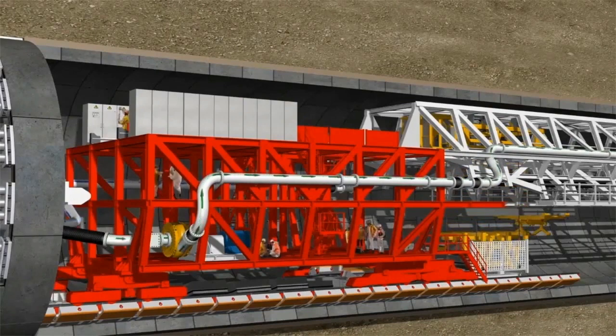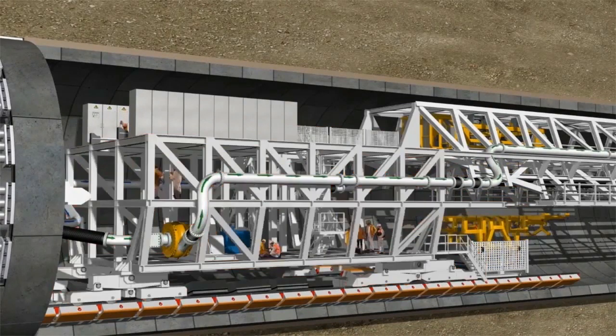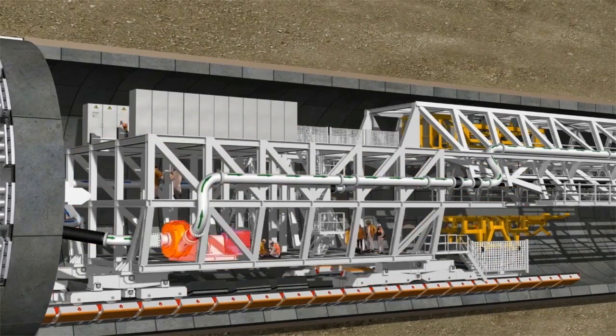The first gantry is located behind the erector. Due to the machine's large diameter, the backup system has three levels, so that it can accommodate the slurry pump, control cabinets, bentonite supply system, and hydraulic pumps.